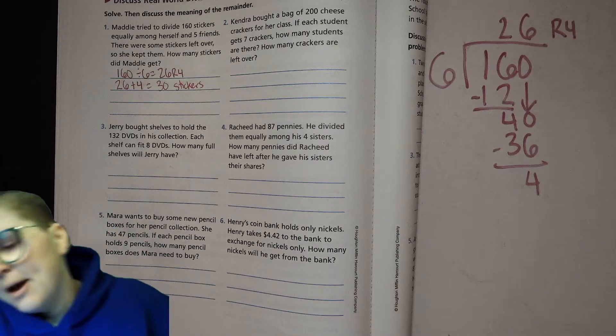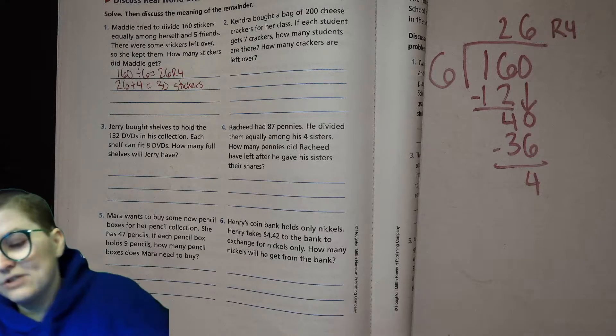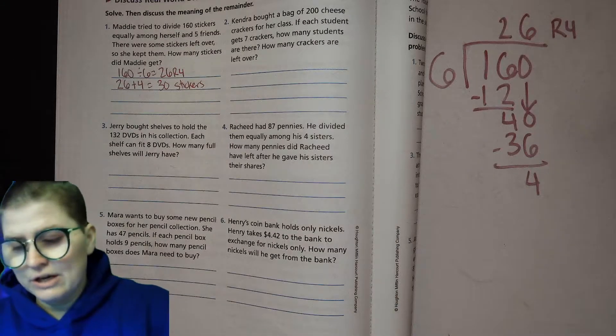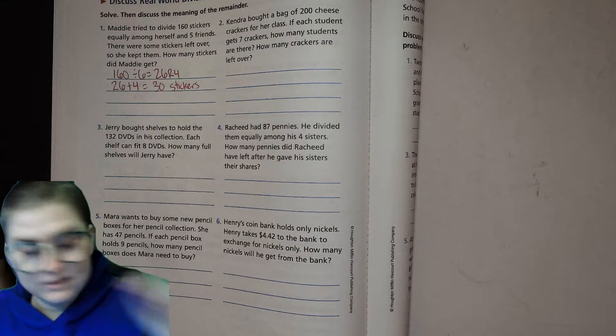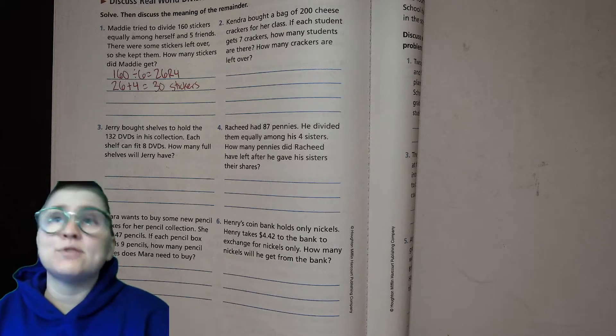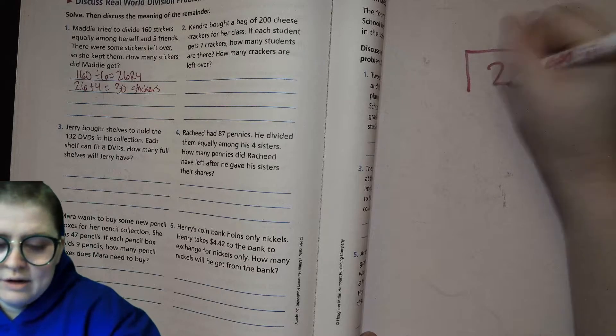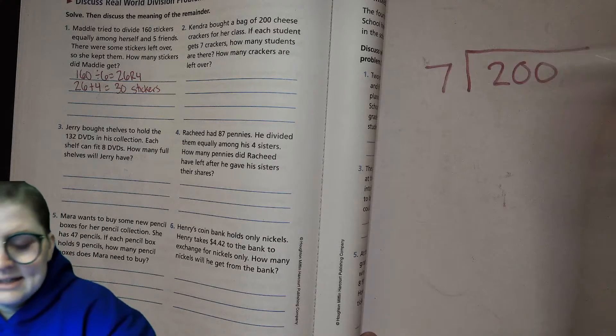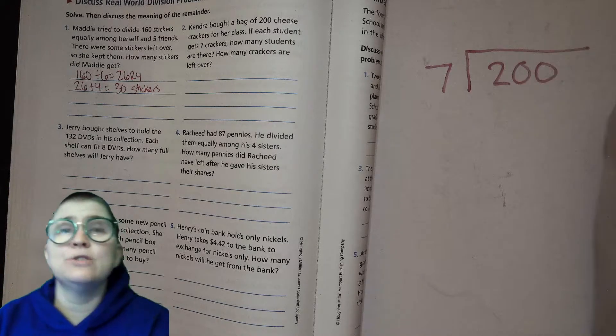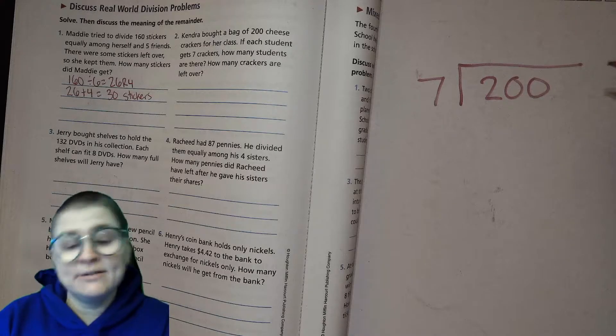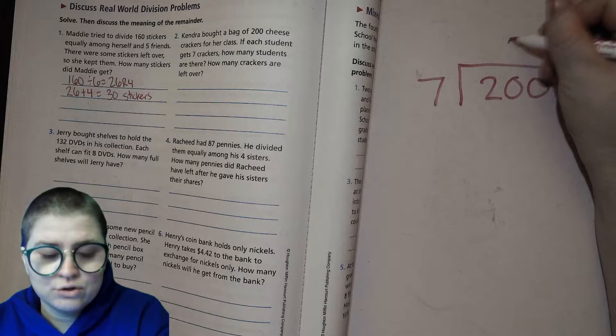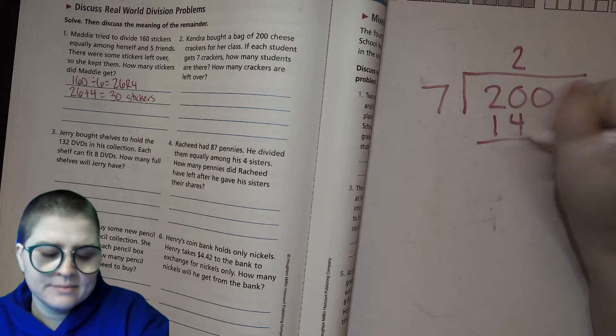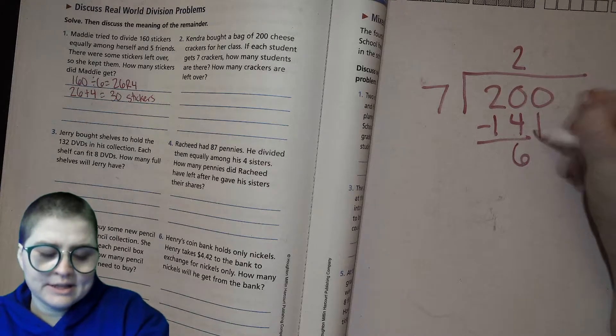Number 2: Kendra bought a bag of 200 cheese crackers for her class, how generous. If each student gets 7 crackers, how many students are there? How many crackers are left over? So we're gonna figure out the number of students and the number of leftover crackers. So 200, the group size is 7. Now we're gonna figure out how many groups. Can 7 go into 2? Not really. Can 7 go into 20? Sure. 7 times 2 is 14, subtract, 6, bring that 0 down.